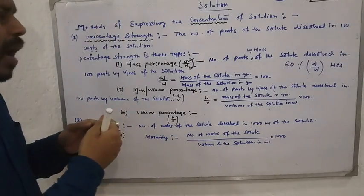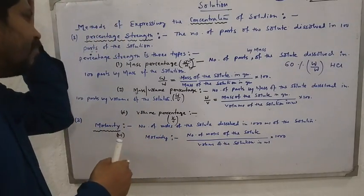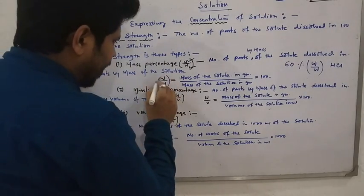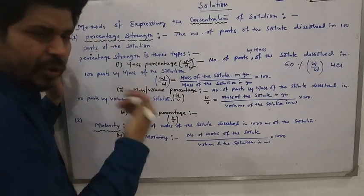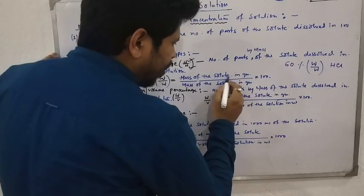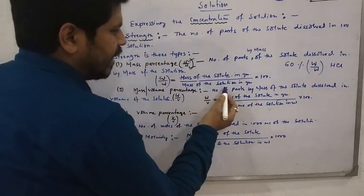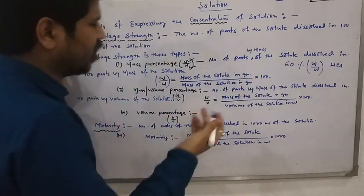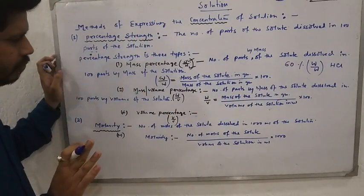The mathematical formula of mass percentage (W/W) is: mass of the solute in grams divided by mass of the solution in grams, multiplied by 100 — because it is a percentage.